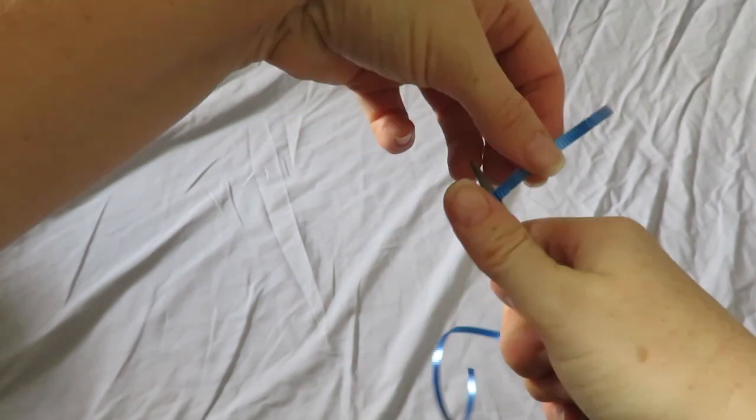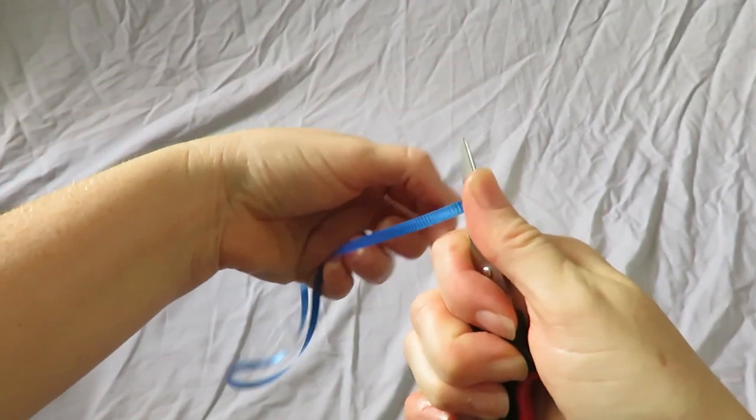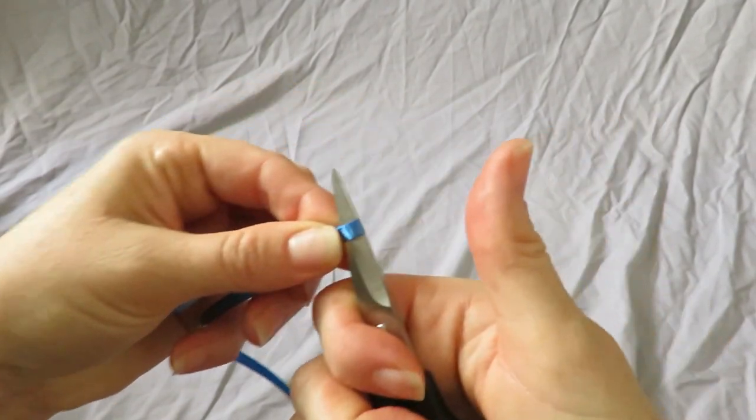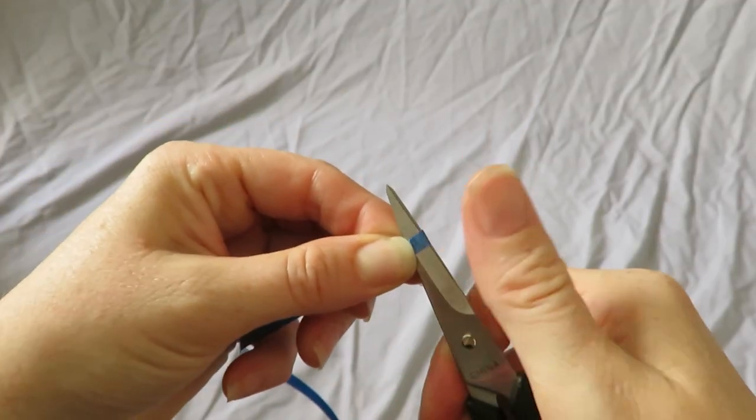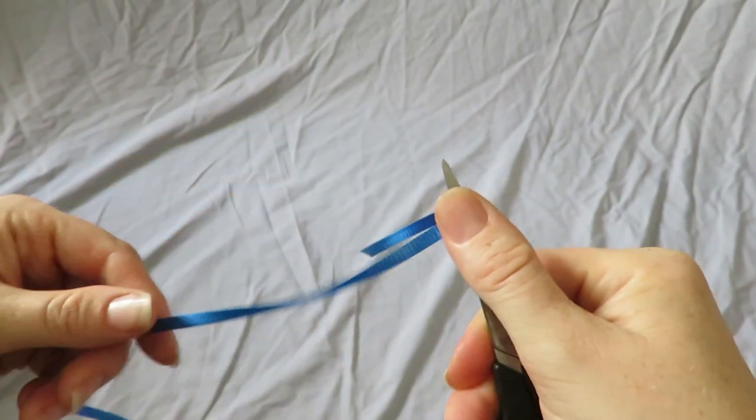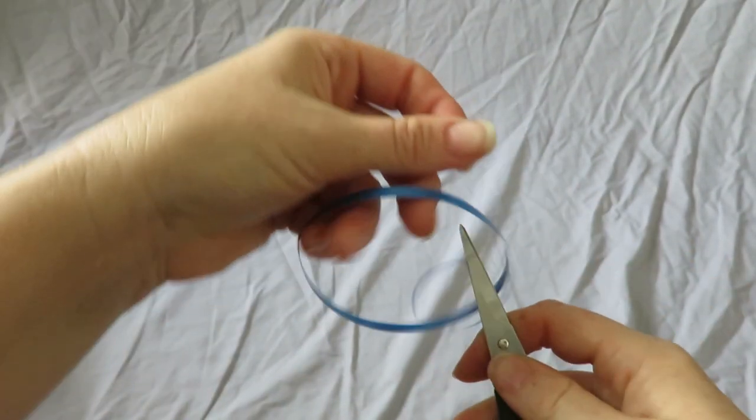So, you're going to line up the ribbon at like a 45 degree angle on the edge of the scissors. And then you're going to cover the ribbon with your thumb. Oops, I'm at the wrong end. Sorry.